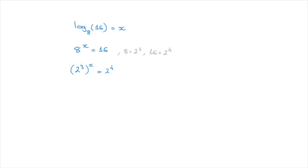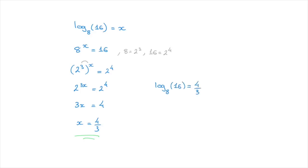On the left-hand side, these two powers multiply together, which leads us to 2 to the power of 3x equals 2 to the power of 4. Since both sides are written as powers of the same number, we can get rid of the base 2 and equate the exponents: 3x equals 4. Solving this equation leads to x equals 4 over 3. And that's the answer. In other words, log base 8 of 16 is equal to 4 over 3, or in exponential form, 8 to the power of 4 over 3 is equal to 16.